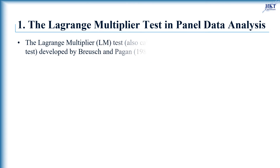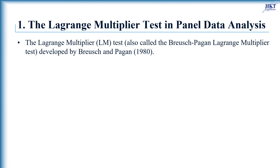In 1980, Breusch and Pagan developed a Lagrange multiplier test for random effects, so this test is also called the Breusch-Pagan Lagrange multiplier test. The test helps us choose between a random effects model regression and pooled OLS regression. The null hypothesis assumes that the random effects are not significant and can be excluded from the model without a substantial loss of information.